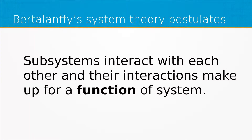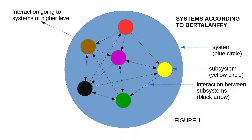Subsystems also interact with each other, which is used to explain the function of a system. For example, in a computer the processor interacts with memory, and some of these interactions may be described as a function of the computer. The interaction of subsystems can be used to generally describe the function of any system in the world. On Figure 1, interactions among subsystems are shown by black arrows. Subsystems may also have interactions with systems other than the blue circle, shown by an arrow on the left pointing outside the blue circle toward a system of higher order.